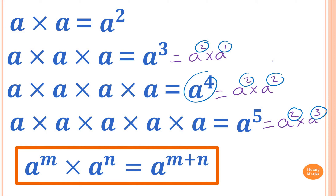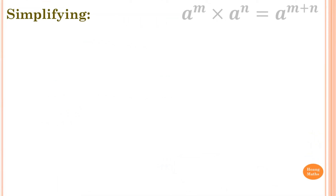Please remember this. Let's do a few examples. So A power 4 times A to the power 5 is equal to A to the power of 4 plus 5, which is 9. So A power 9.